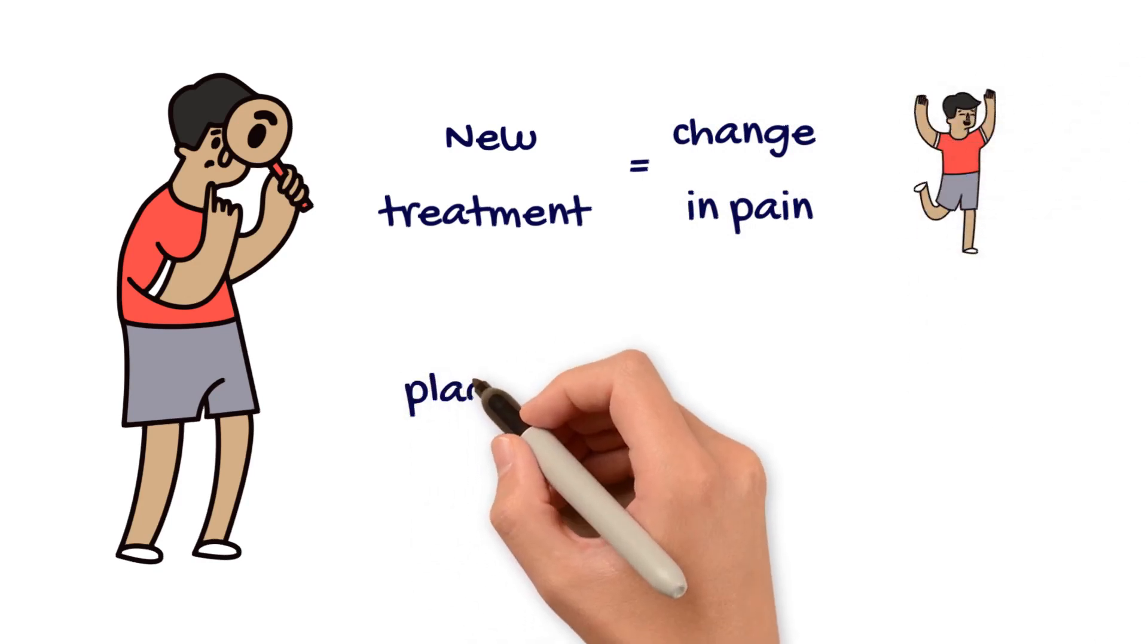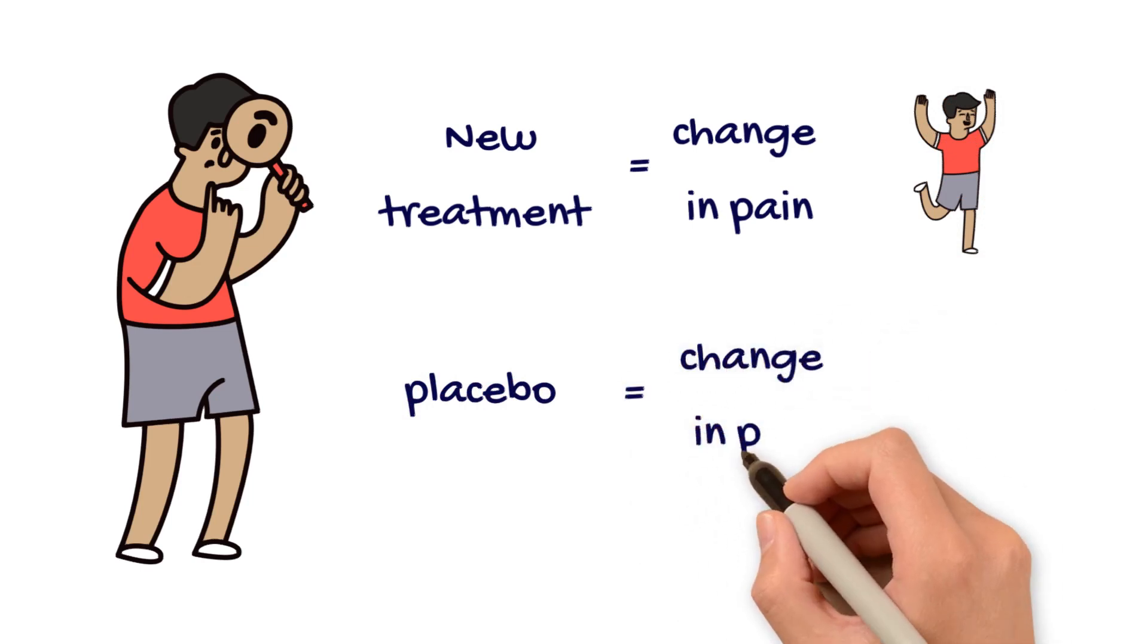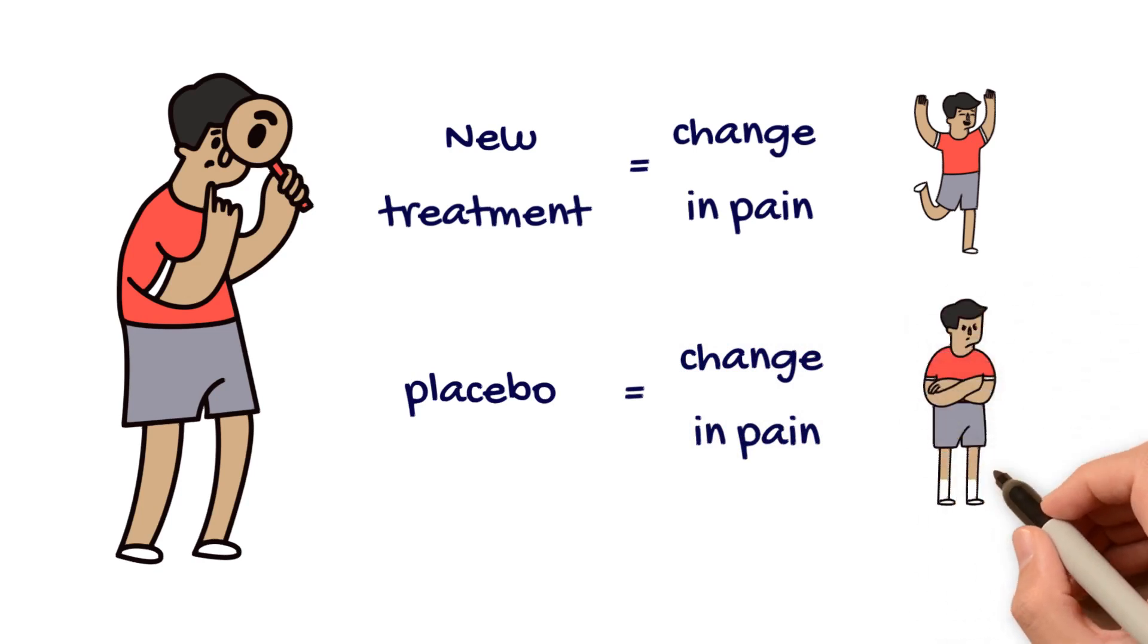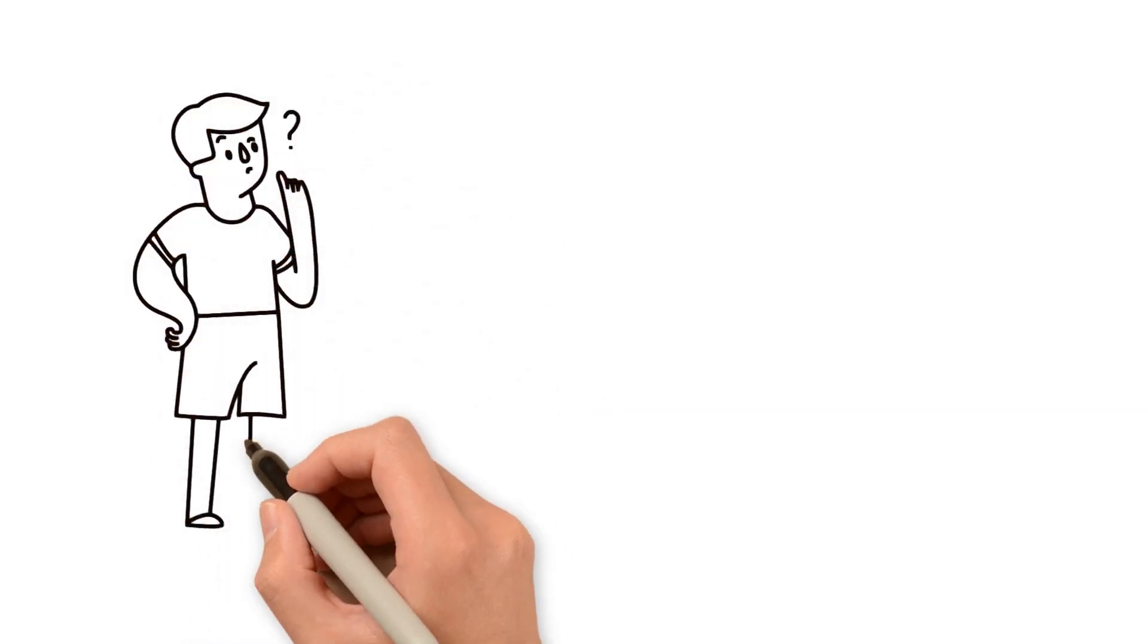On the other hand, if you know that you've been given the placebo pill, you may be more likely to attribute any changes in your pain to natural fluctuations rather than to the intervention you receive. Your expectations of each of these treatments may influence how you report your own pain to the researchers.